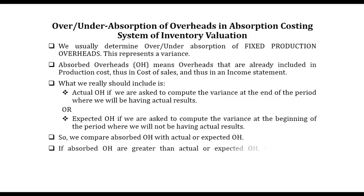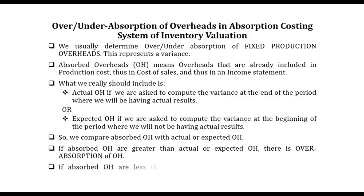If absorbed overheads are greater than actual or expected, that is an over-absorption — meaning we included more than we should have in the income statement. Absorption means inclusion, what we have included. If absorbed overheads are less than actual or expected overheads, that means we included less than we should have, and this is called an under-absorption.